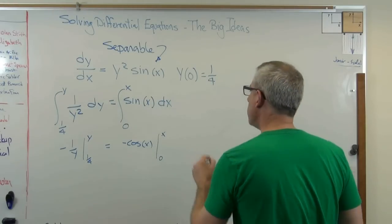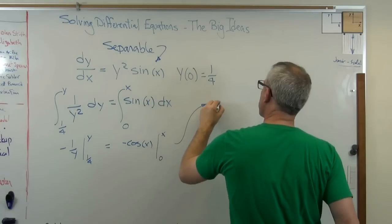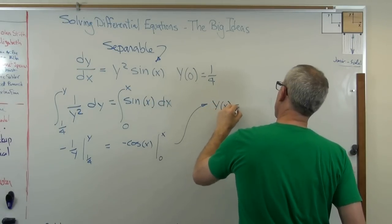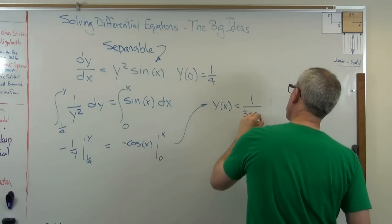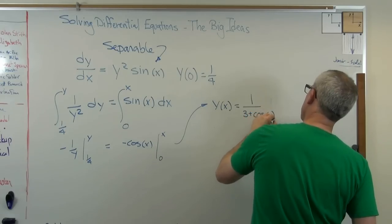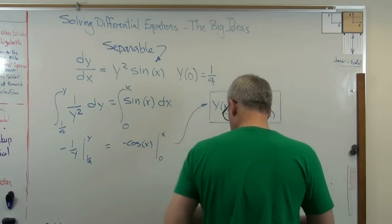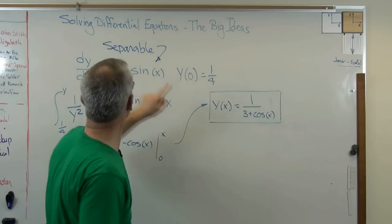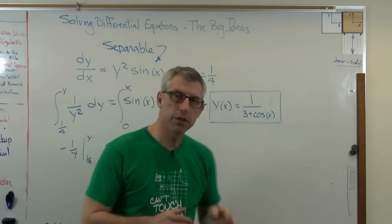So what I can do is go ahead and evaluate this at the limits. And if you do that, what you come up with is y of x equals 1 over 3 plus cosine x. And that is indeed the solution. If I substitute that into this, I find out that it's true.